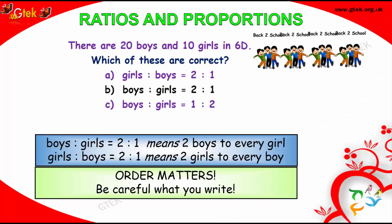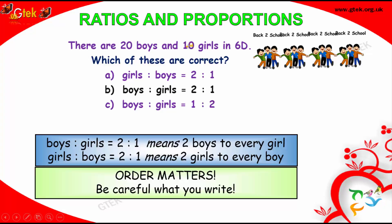There are 20 boys and 10 girls in 6D class. Which of the option is correct? 20 boys, 10 girls. So, boys to girls ratio is 20 is to 10, that's 2 is to 1.